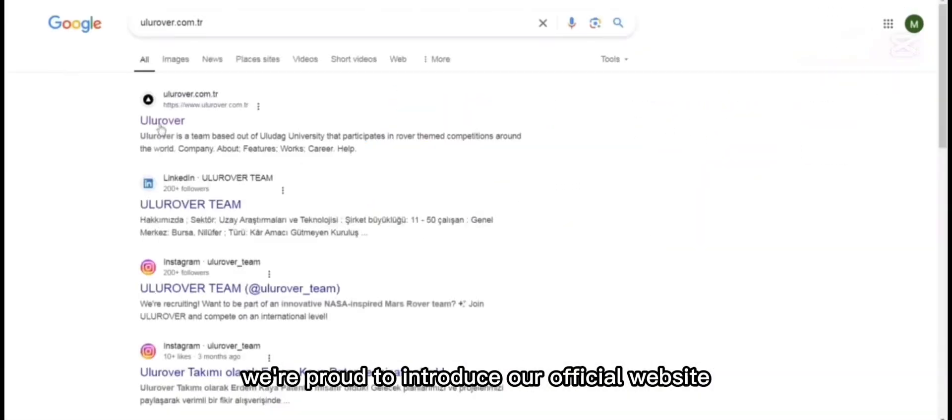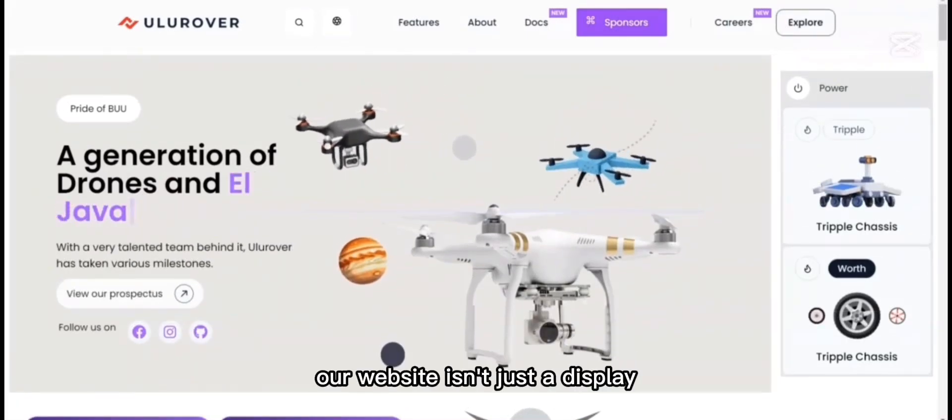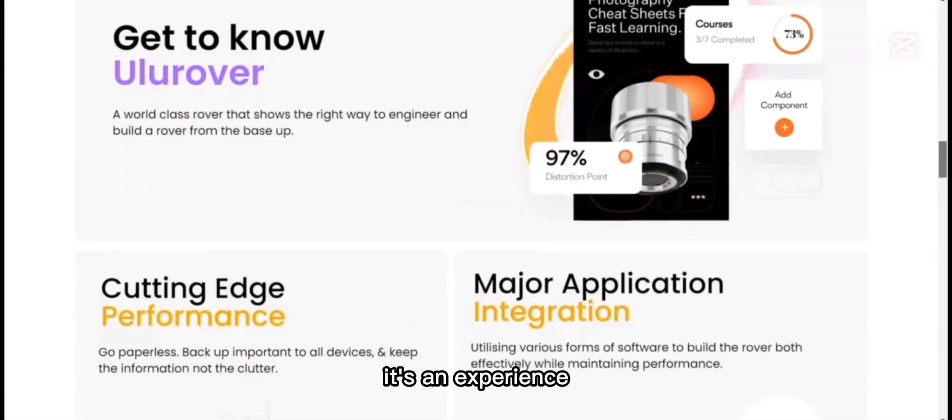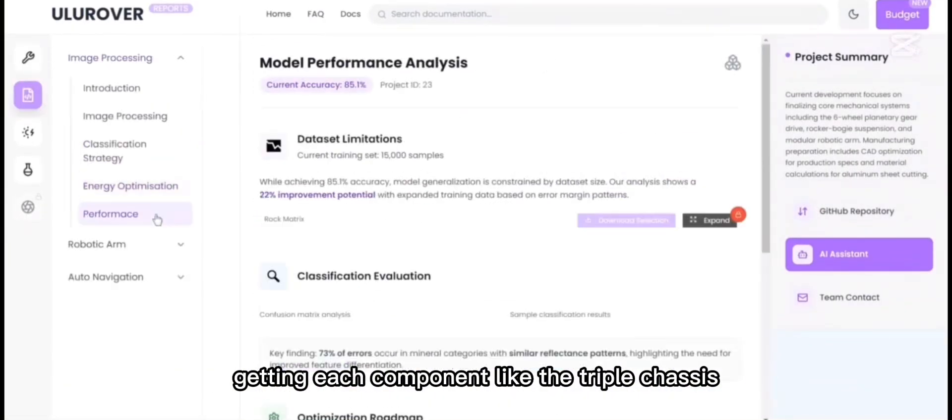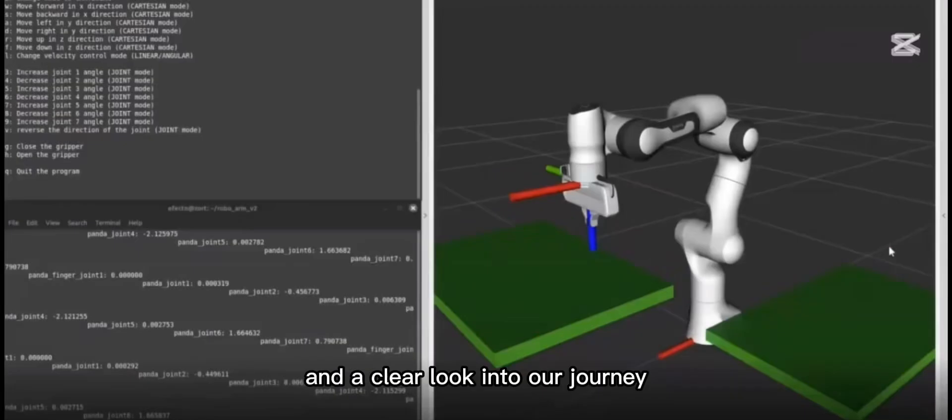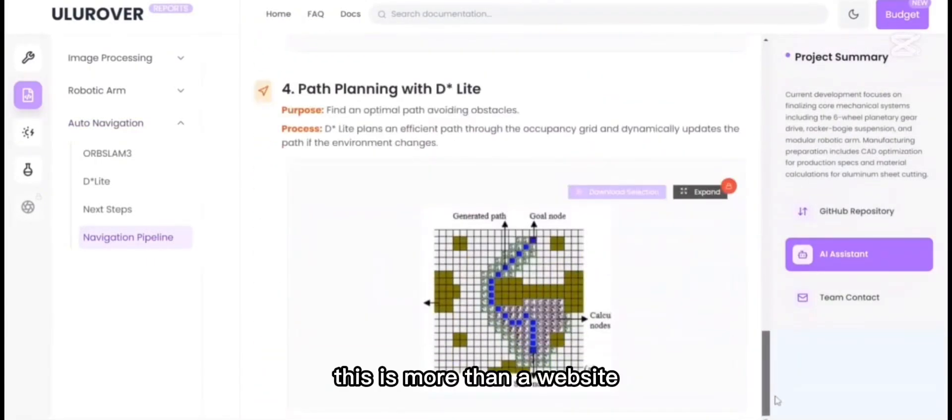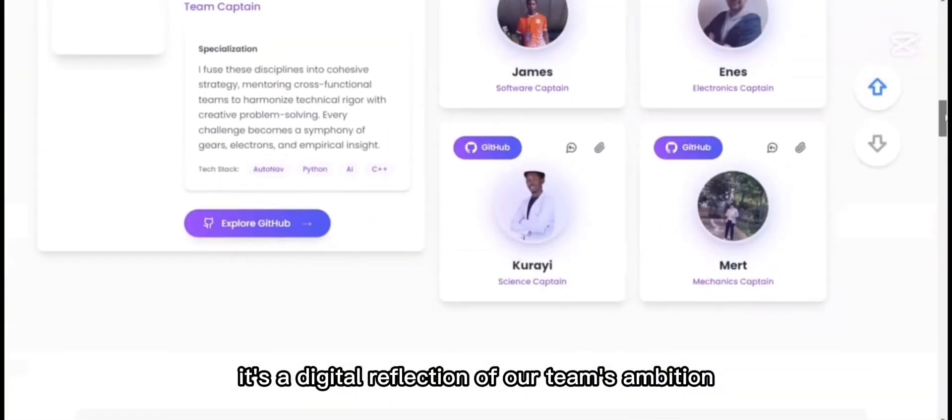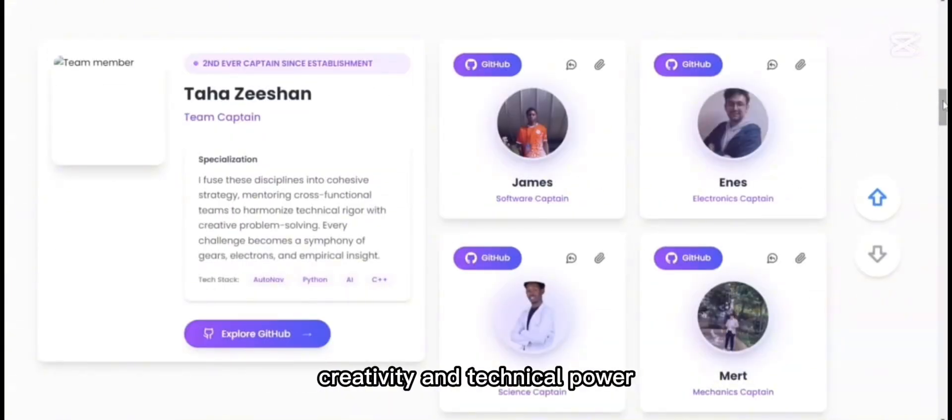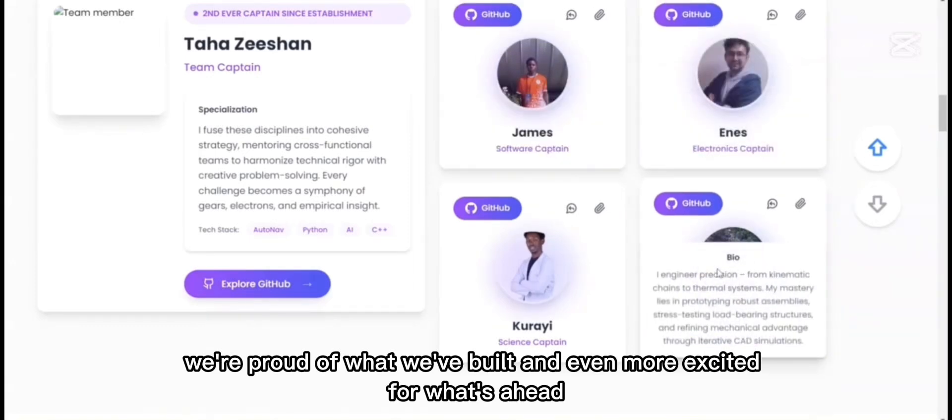We are proud to introduce our official website where you can follow our progress and learn more about the team. Our website isn't just a display, it's an experience. Here, we showcase our high performance rover designs, cutting edge components like the triple chassis and a clear look into our journey through advanced drone systems and robotics engineering. This is more than a website, it's a digital reflection of our team's ambition, creativity and technical power. We are proud of what we built and even more excited for what's ahead.